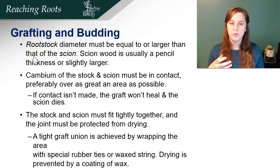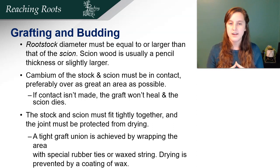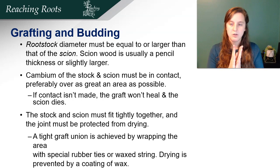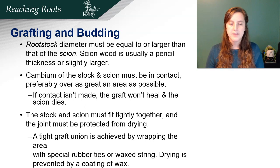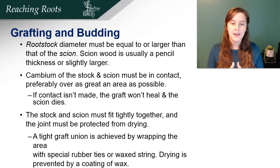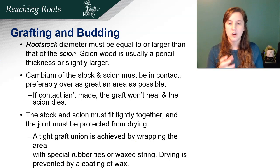The plant on the bottom is called the rootstock and the one on the top is called the scion. The rootstock diameter must be larger than the scion. Scion wood is usually pencil thickness or slightly larger. The cambium of the rootstock and scion must be in contact — you want maximum surface area so they will heal. If contact isn't made, the graft won't heal and the scion dies. The rootstock and scion must fit together tightly and the joint must be protected from drying out. A tight graft union is achieved by wrapping the area with a rubber tie or wax string, and drying is prevented by a coating of wax.